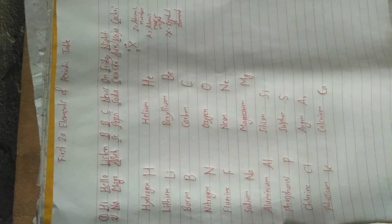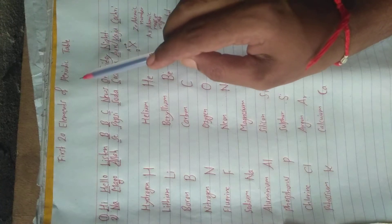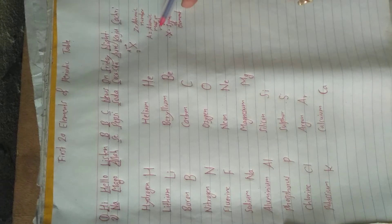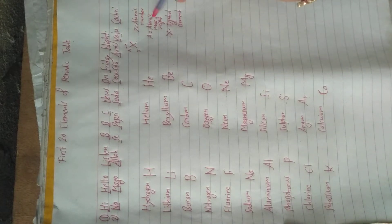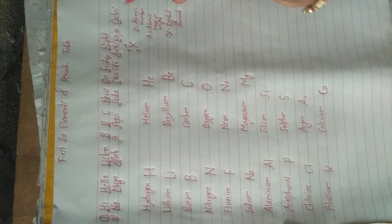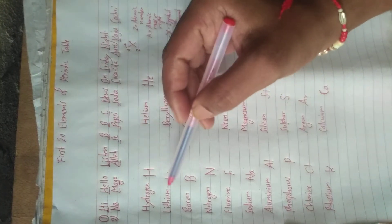Hi class 9 and 10 students. Today I am going to explain the first 20 elements of the periodic table. In this session I will teach you how to find atomic number, atomic mass, and neutron number. Atomic number is easy but atomic mass and neutron number is difficult, so for this I have brought this video. We just have to remember two sentences to recall the first 20 elements.